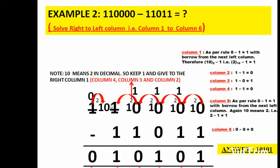The fourth column is 1 minus 1, which is 0. Now the fifth column had 0, so 0 minus 1 is not possible again. It asks a borrow from the last column, which has 1, so it provides a borrow and turns itself to 0. The fifth column now has 10, which is 2 in decimal — 2 minus 1 is 1. The sixth column: 0 minus 0 is 0. So my final answer is 0101010, or you can write 101010.